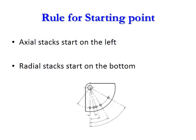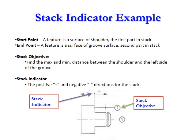Rules for starting point: Axial stacks start on the left, radial stacks start on the bottom. Stack indicator example. A feature is a surface. Stack point in this stack indicator example: it is a feature and surface of the shoulder, that is first part in stack. The second point: a feature, that is a surface of a groove, that is second part in stack. Stack objective here is find the maximum and minimum distance between the shoulder and the left side of the groove. Stack indicator: the positive and negative directions for the stack.